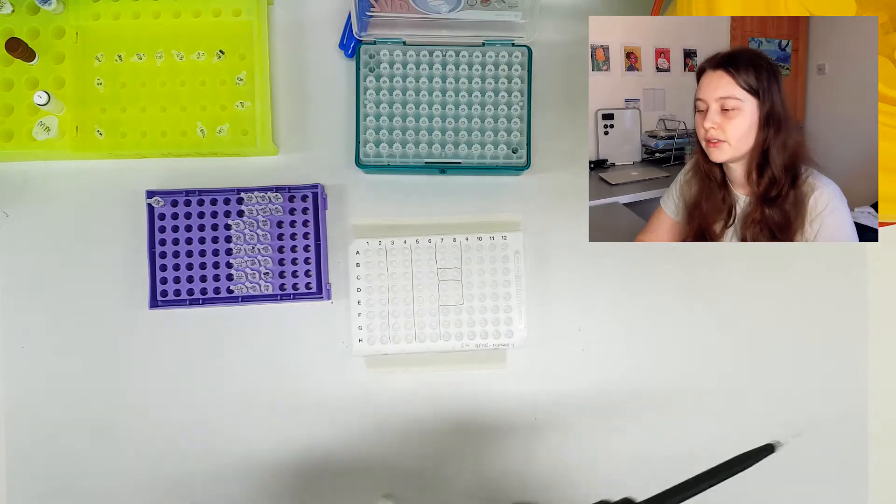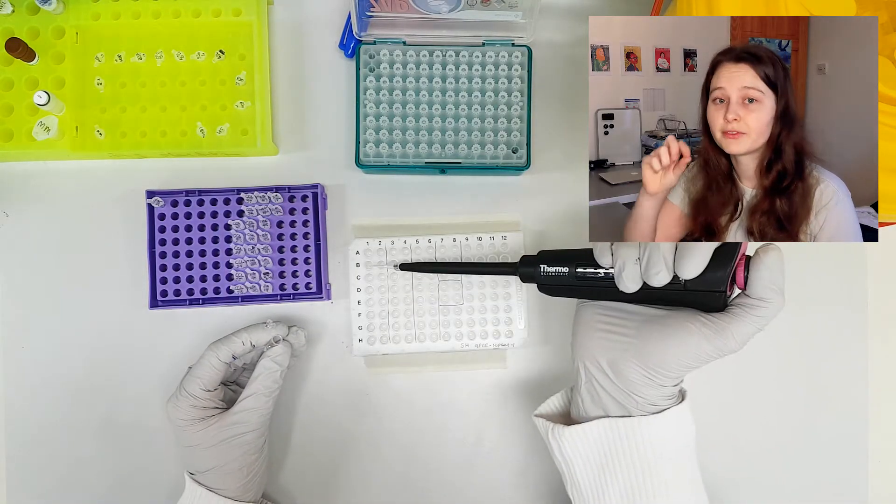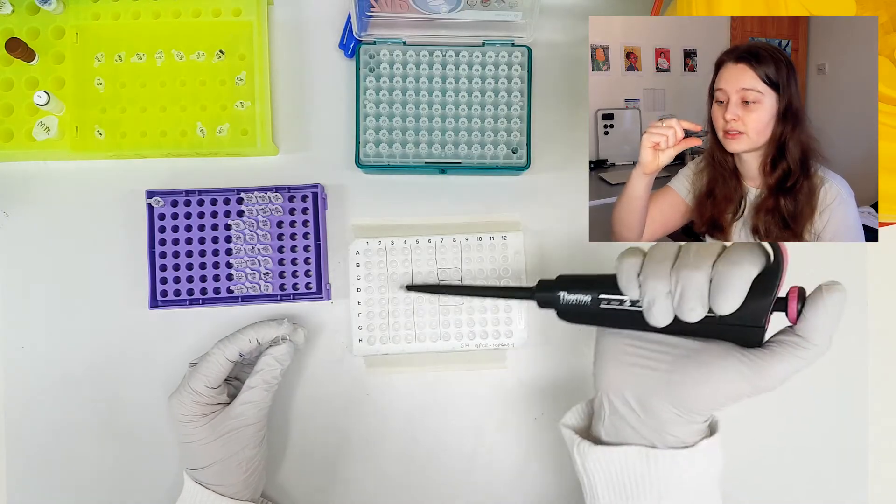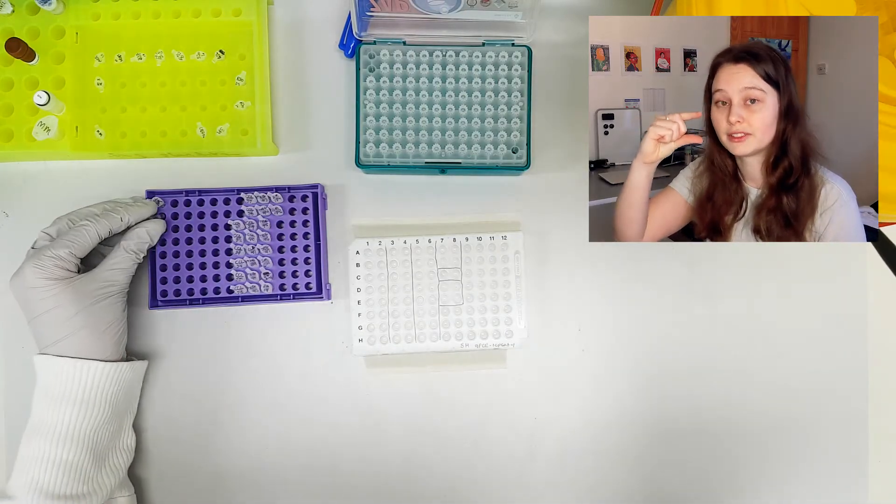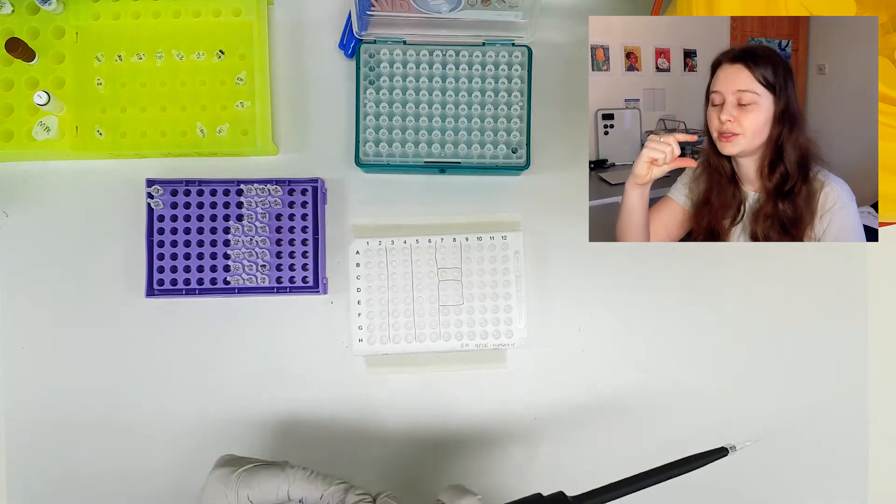So there's a few different ways I've got of making sure what I'm putting where. So the change in volume from 6 microliters of master mix to the additional 3 microliters-ish of sample that's going into these wells is hard to visually distinguish.